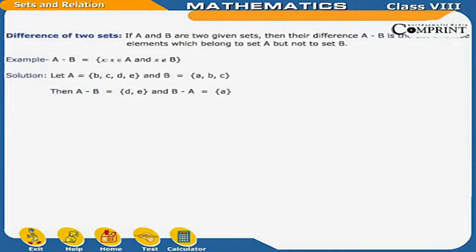Difference of two sets: if A and B are two given sets, then their difference A − B is the set of those elements which belong to set A but not to set B. That is, A − B = {x : x ∈ A and x ∉ B}. For example, let A = {B, C, D, E} and B = {A, B, C}. Then A − B = {D, E} and B − A = {A}.